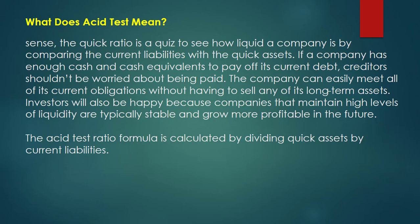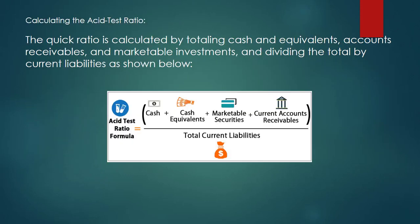Investors will also be happy because companies that maintain high levels of liquidity are typically stable and grow more profitable in the future. The acid-test ratio formula is calculated by dividing quick assets by current liabilities. Specifically, the quick ratio is calculated by totaling cash and equivalents, accounts receivable, and marketable investments, then dividing the total by current liabilities, as you can see in the picture.